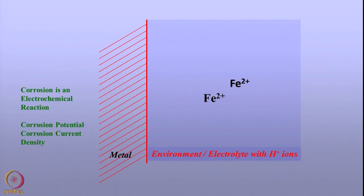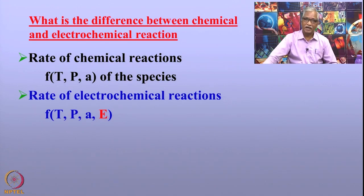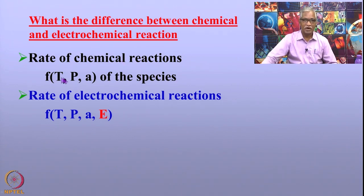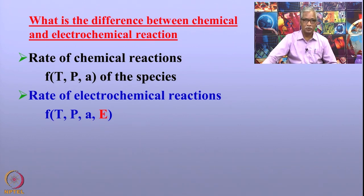Now let us look at how we really control the corrosion of this metal. Before we get into cathodic protection, I also want to bring out the difference between a chemical reaction and electrochemical reactions. To summarize: the rate of a chemical reaction is a function of temperature, pressure, and activity of the species. As opposed to that, the electrochemical reaction is a function of temperature, pressure, and activity — and in addition to that, we have potential. So the potential can be used to control the electrochemical reaction, in this case the corrosion process.